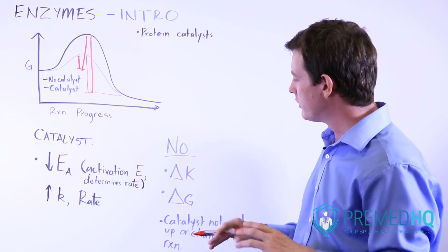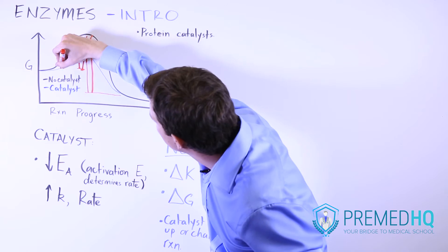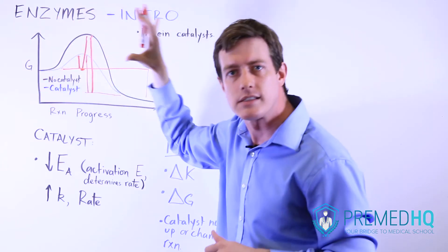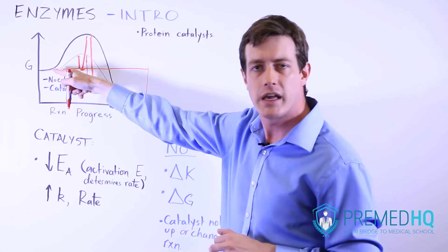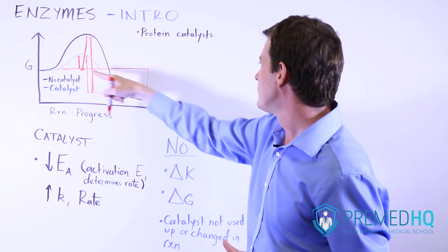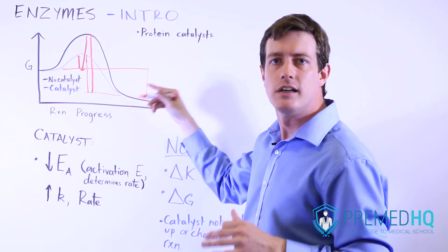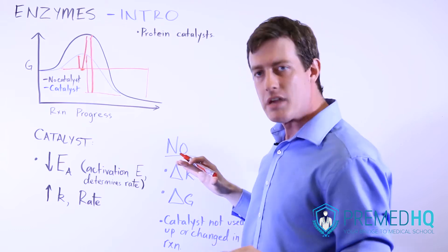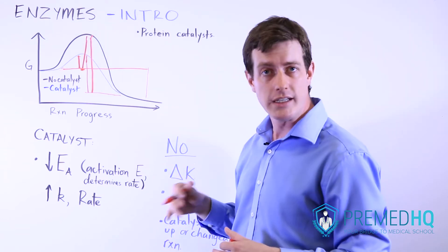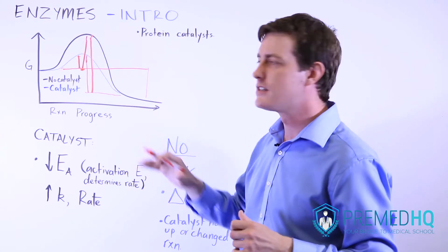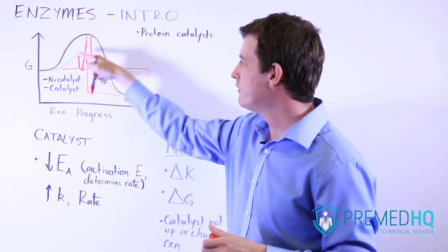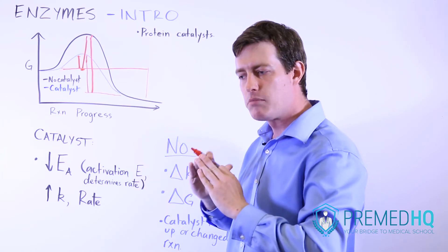Something else that doesn't change is the Gibbs free energy — or the change in Gibbs free energy. You calculate that by looking at where the reaction starts and where it finishes. The y-axis is Gibbs free energy, so it starts at some energy level and ends at a different one, but that difference doesn't change whether you're using an enzyme or not. Something that is exothermic without an enzyme will be exothermic with an enzyme — it might happen more quickly, but every time the reaction occurs it's the same change in energy overall.